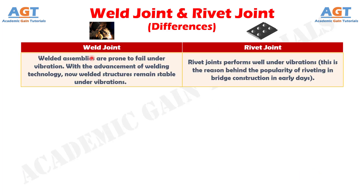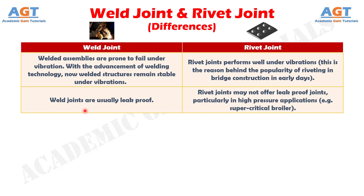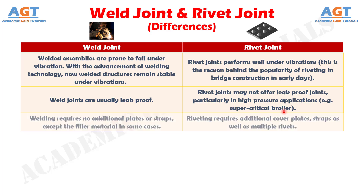Number 6: welded assemblies are prone to fail under vibration. With the advancement of welding technology, no welded structures remain stable under vibrations, whereas rivet joints perform well under vibrations. This is the reason behind the popularity of riveting in bridge construction in early days. Number 7: weld joints are usually leak proof, whereas rivet joints may not offer leak proof joints, particularly in high pressure applications, for example in a supercritical boiler.